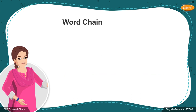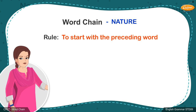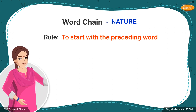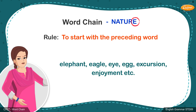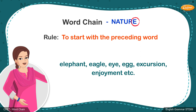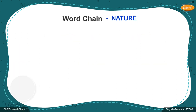Let us make a word chain with the given word 'nature.' The rule is to make use of any word that follows the rule that it should start with the last alphabet of the preceding word. Think about a noun that starts with the alphabet E, as in the last letter of 'nature.' You can write elephant, eagle, eye, egg, excursion, enjoyment, etc.